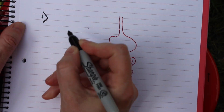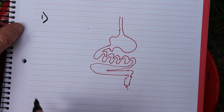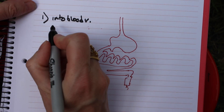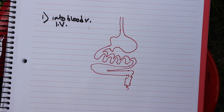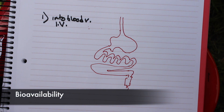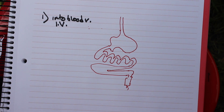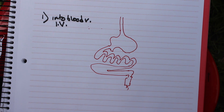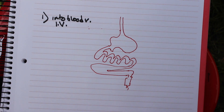First, you can give it into the blood vessels, especially IV. If you give a drug IV, you're putting that drug directly into the bloodstream. So what we call the bioavailability — the amount of drug that got into the bloodstream to do its thing — is 100% with IV, because you put it right into the bloodstream. You can also put it in the arteries, but generally speaking IV is the way to go. That's 100% bioavailability, the fastest way to get drugs into the bloodstream.